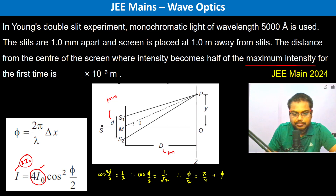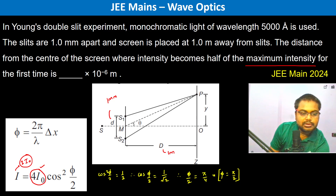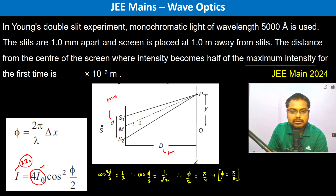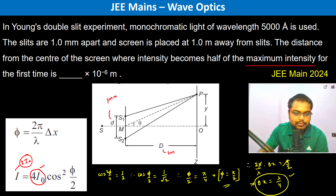Therefore φ = π/2. Now using the relation φ = (2π/λ)·Δx, we set (2π/λ)·Δx = π/2. Solving, Δx = λ/4. So the path difference corresponding to this phase difference is λ/4.